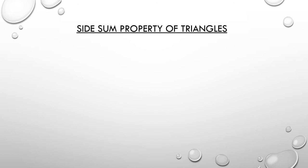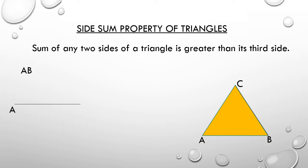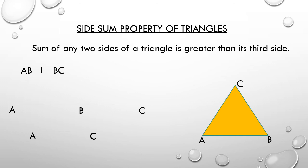Now let us learn the next property: the side sum property of triangles. The sum of any two sides of a triangle is always greater than its third side. Let us check it with triangle ABC. Take side AB and add it with side BC. Adding, we get AB plus BC, and when we compare this with side AC, we can notice that AB plus BC is always greater than AC.